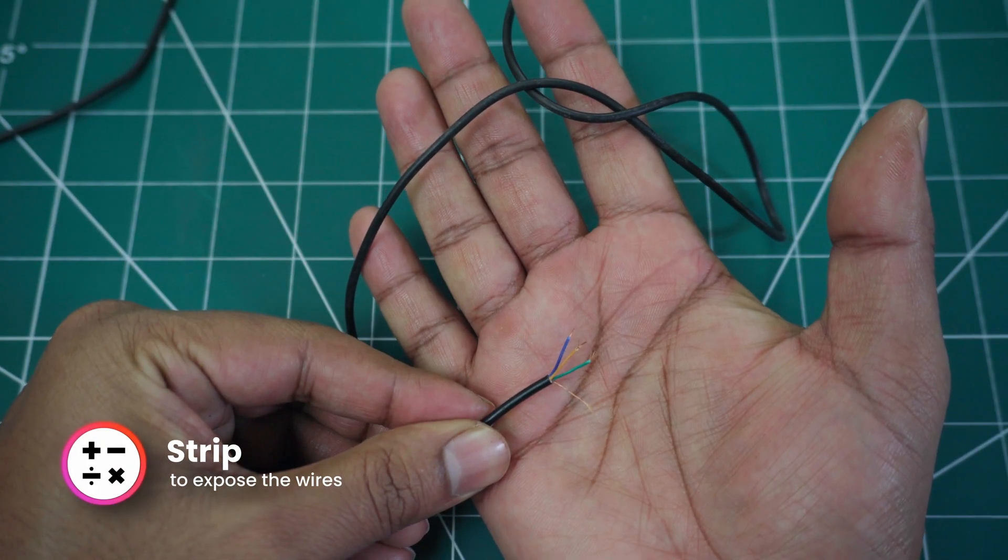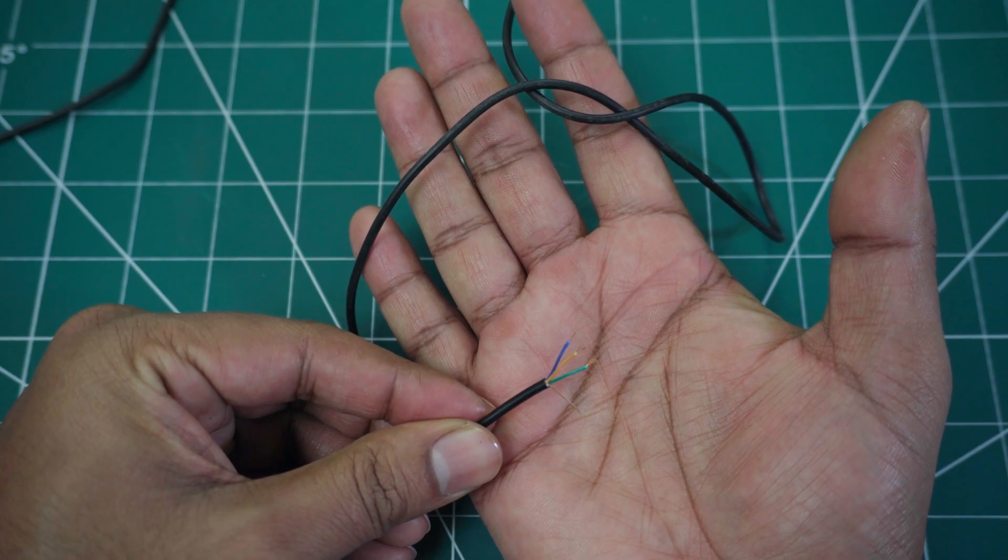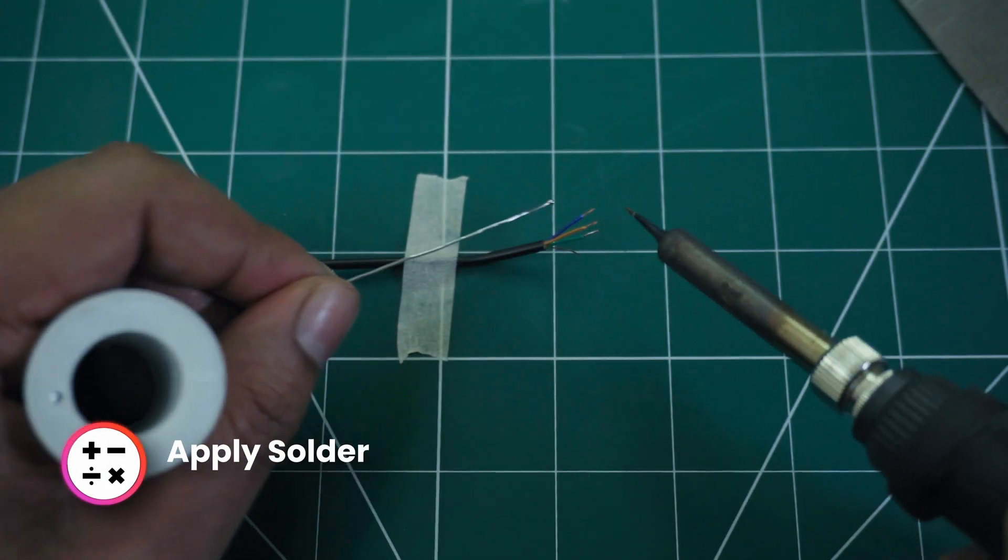Next, strip a small portion of the protective layer from all four wires. Apply a small amount of solder to the exposed wires.